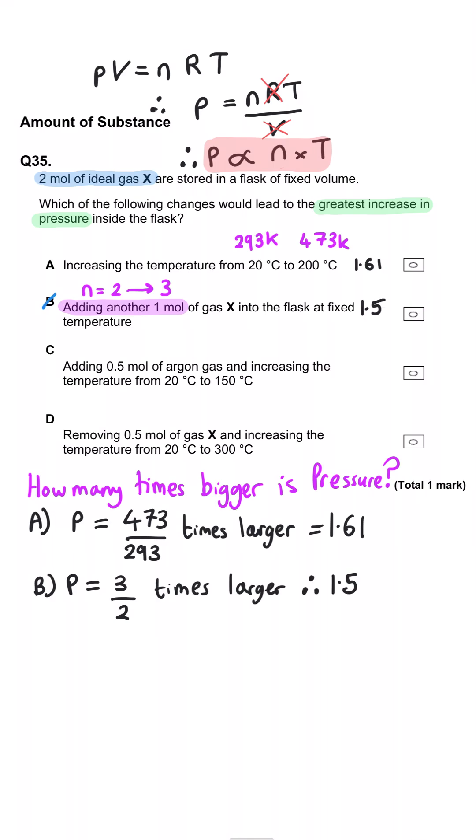C gets trickier because we're adding 0.5 moles. So we're going from 2 to 2.5. And the temperature is changing from 293 Kelvin to 423 Kelvin. So we've actually got two fractions here. It's 2.5 divided by 2 and 423 divided by 293, which gives us a total of 1.8 times bigger. So C is looking the biggest so far.